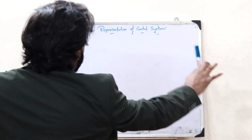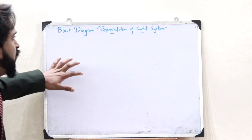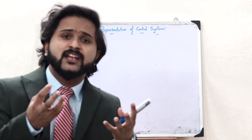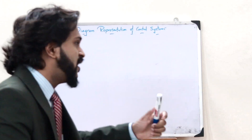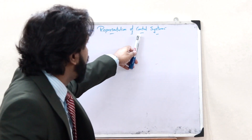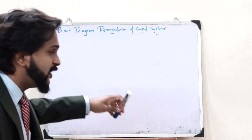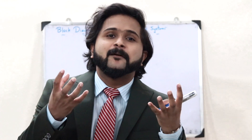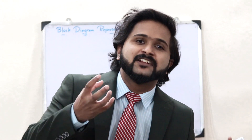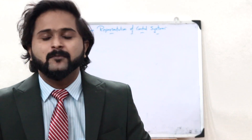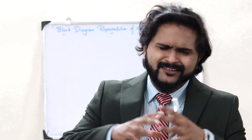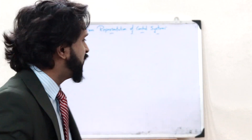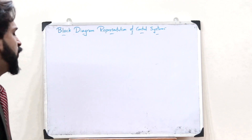Block diagram representation of a control system — just like the name suggests, this is a way in which we can represent a particular control system using block diagrams. That is, the pictorial representation of a control system using block diagrams is simply what we refer to as a block diagram representation of a control system.